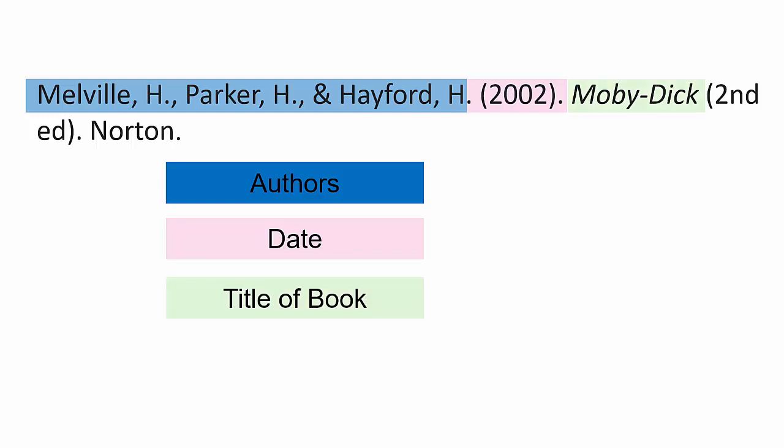Then the title of the book. Only the first word, proper nouns like in this example, and words following a colon, semicolon, or period are capitalized. The title is also in italics. If you are using an edition other than the first, the book title will be followed by, in parentheses, the edition number in ordinal format followed by 'ed.' — for example, the second edition is written as '2nd ed.'